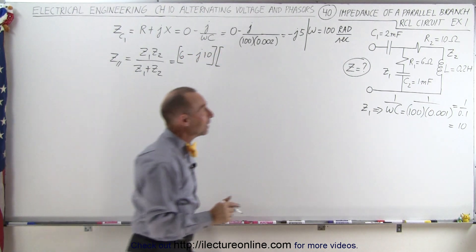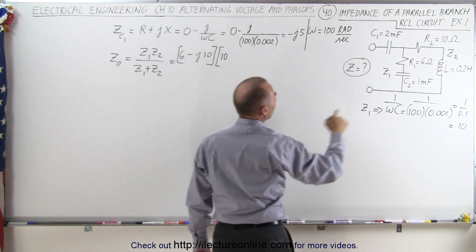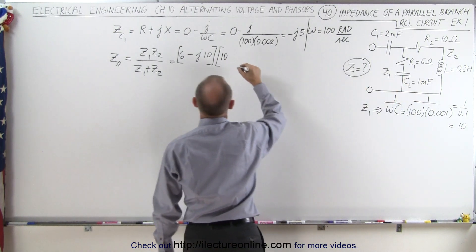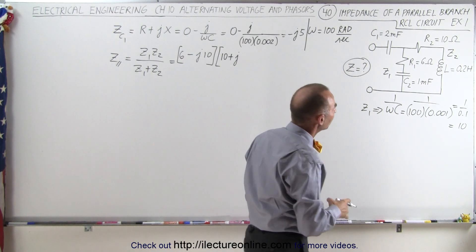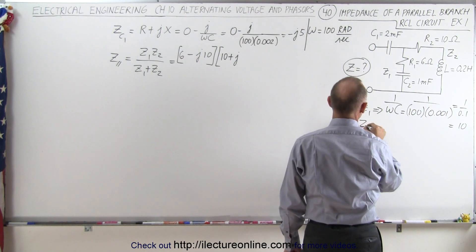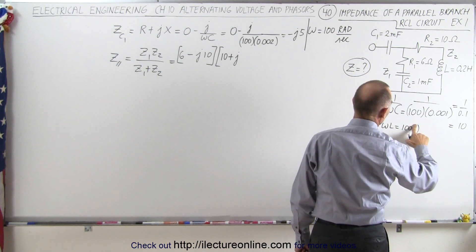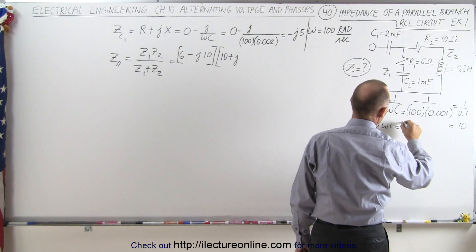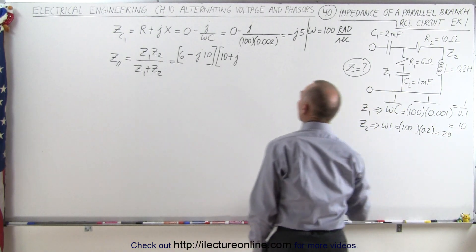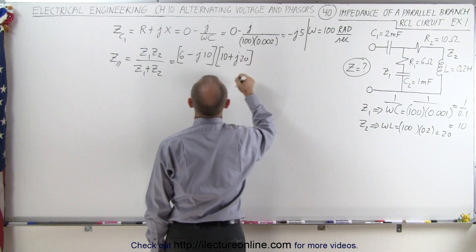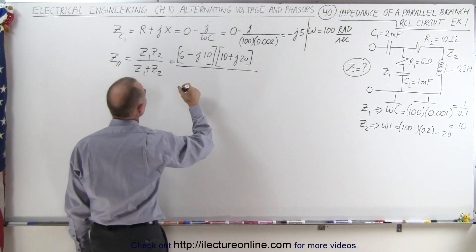For Z2, the impedance in the second branch: we have a 10-ohm resistor giving us the real part, and in this case we have an inductor, so it's plus j — because in inductors the voltage leads the current. For Z2, omega times L is 100 times 0.2, which equals 20, giving us plus j20. So Z2 = 10 plus j20.